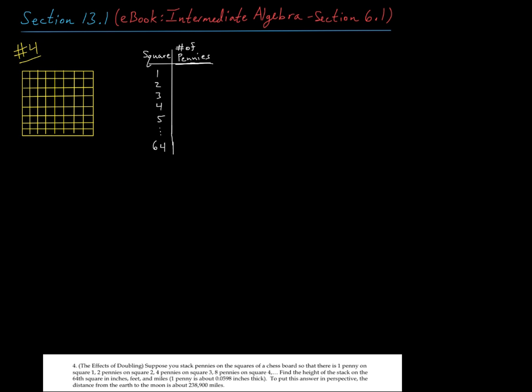Okay, so if I fill out this table on square one, I have one penny. On square two, then I have two pennies, then it goes to four, eight, sixteen, so on and so forth.